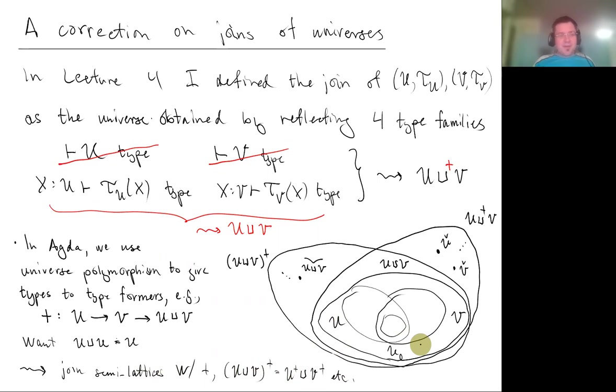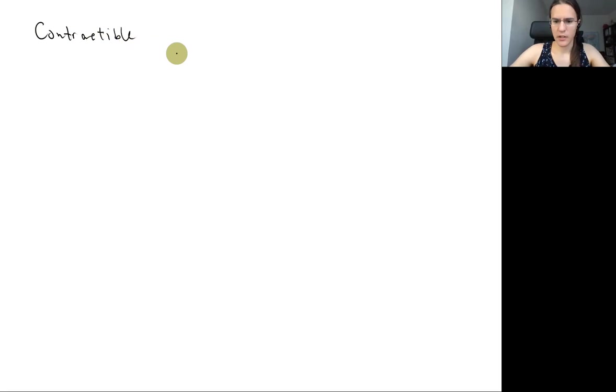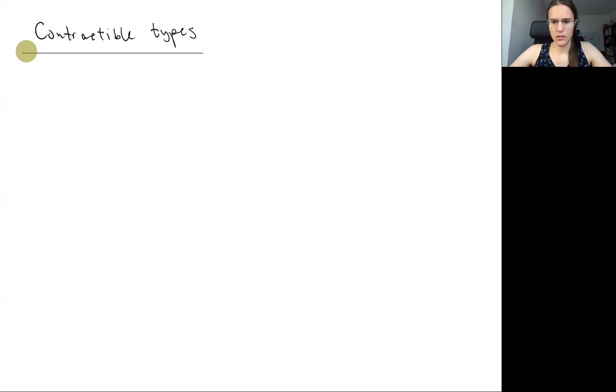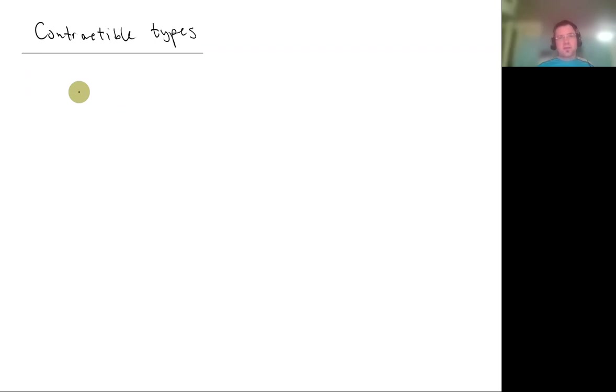Any questions about this matter, about the joins of universes and this correction? If not, I will continue to contractible types.